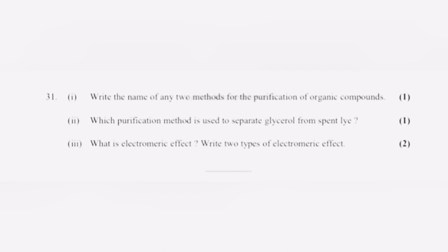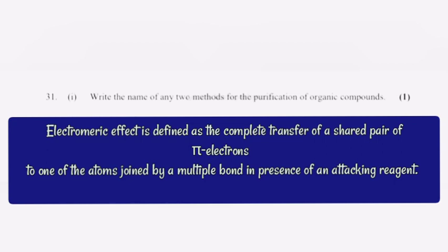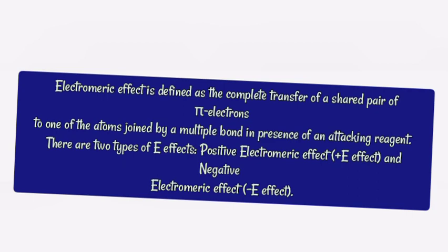Part 3: What is electromeric effect? Write two types of electromeric effect. Answer: Electromeric effect is defined as the complete transfer of a shared pair of pi electrons to one of the atoms joined by a multiple bond in the presence of an attacking reagent. There are two types of electromeric effects: positive electromeric effect and negative electromeric effect.